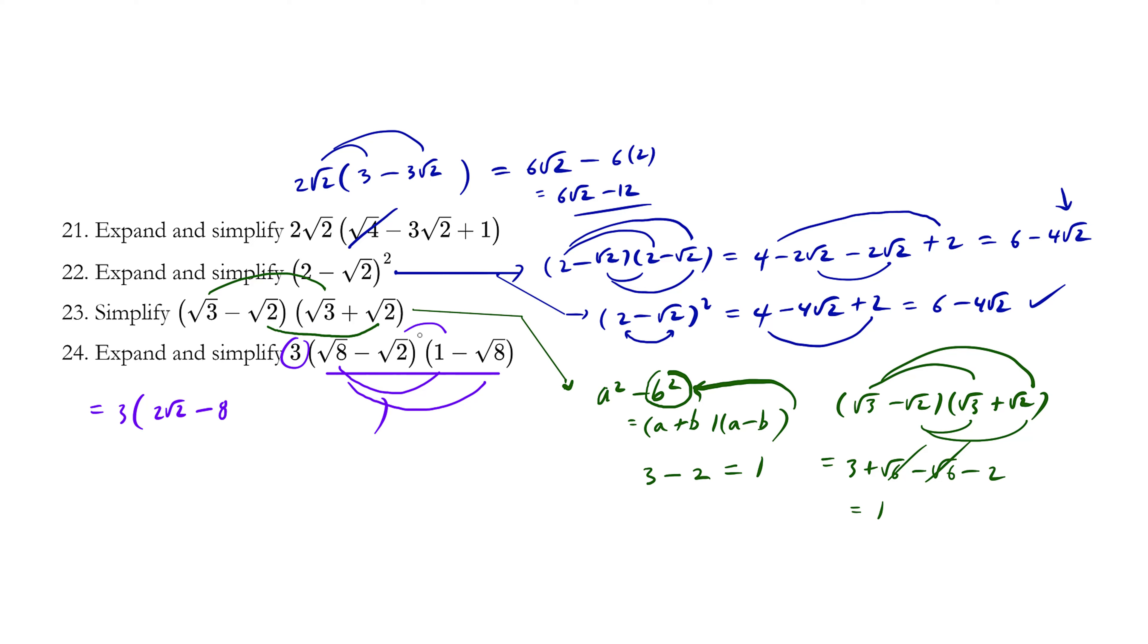Let's try inside. Anything times 1 is itself, which is negative root 2. And last, negative root 2 times a negative number is positive. 2 times 8 is 16, so we have root 16, or you could simply write 4. We can clean this up a little bit. We have the number negative 8 and 4, which becomes simply negative 4. And we have 2 root 2 minus 1 root 2, or just root 2, is going to be root 2.